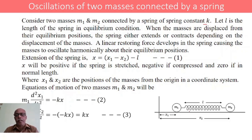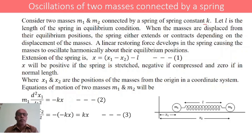The extension of the spring is given by x equals x1 minus x2 minus l. Here x will be positive if the spring is stretched, x will be negative if the spring is compressed, and zero if it is in equilibrium — that is, when there is no compression or expansion, the spring is in its normal position and the extension x will be zero.